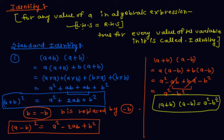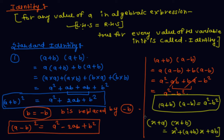Now the application of identity. One more identity which you will solve as homework: if I take (X + A)(X + B), then it equals X² + (A + B)X + AB. For the proof of this identity, solve it as homework. And if you have any problem, comment in the comment section of this video.